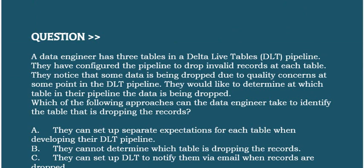Next question: A data engineer has three tables in a Delta Live Tables (DLT) pipeline. They have configured the pipeline to drop invalid records at each table. They notice that some data is being dropped due to quality concerns at some point in the DLT pipeline, and would like to determine at which table in their pipeline the data is being dropped.